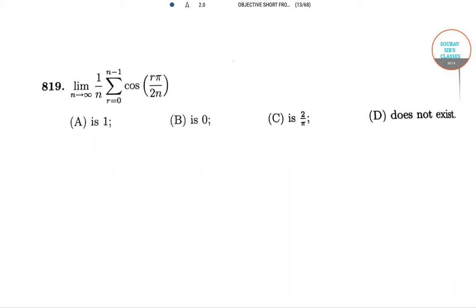In our first question, we need to find the limit where n tends to infinity of 1 by n, summation r runs from 0 to n minus 1 of cos(r·π / 2n). Now this limit can also be represented in the form of definite integration.